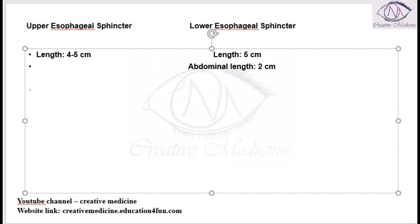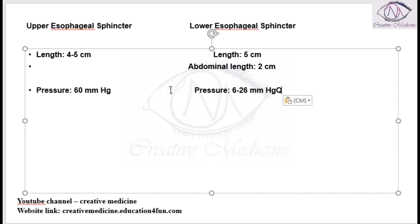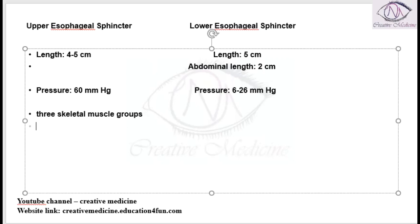The pressure of the upper esophageal sphincter is 60 millimeters of Hg, whereas the pressure of the lower esophageal sphincter is 6 to 26 millimeters of Hg. The upper esophageal sphincter comprises three muscle groups.